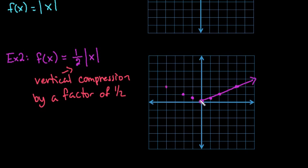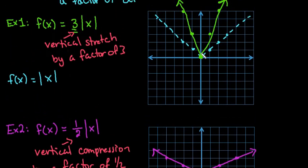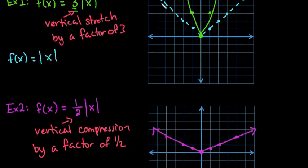Our graph doesn't open nearly as quickly. When you have a stretch, it goes up much faster than the parent function. When you have a compression, it's like a compressor pushed it down, so there's a downward movement on our original graph. As always, thanks for watching. If you have any questions, please reach out to me. If there are other topics you need me to cover, let me know, and make sure to check out all of the other content I have — I continue to add regularly.